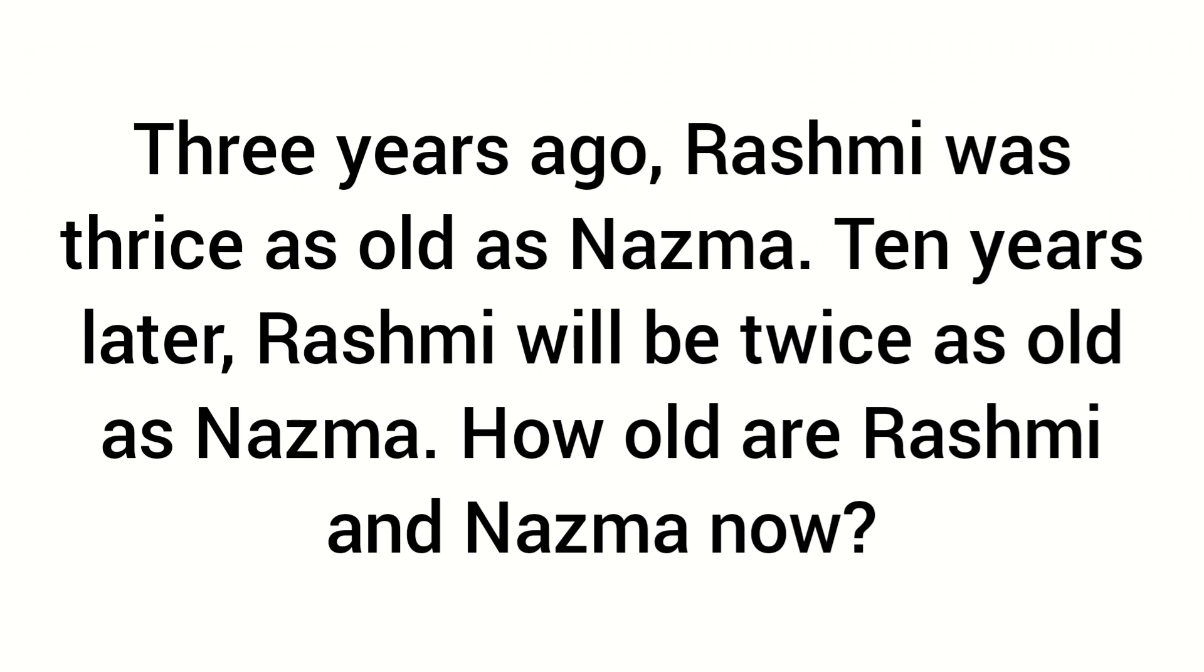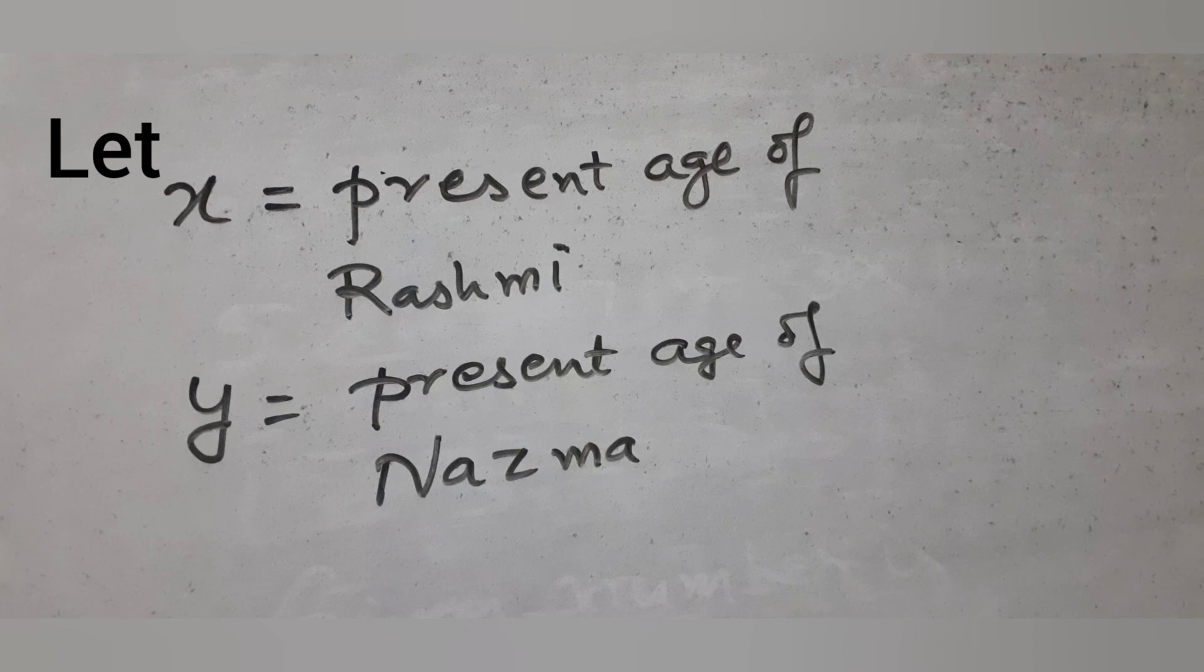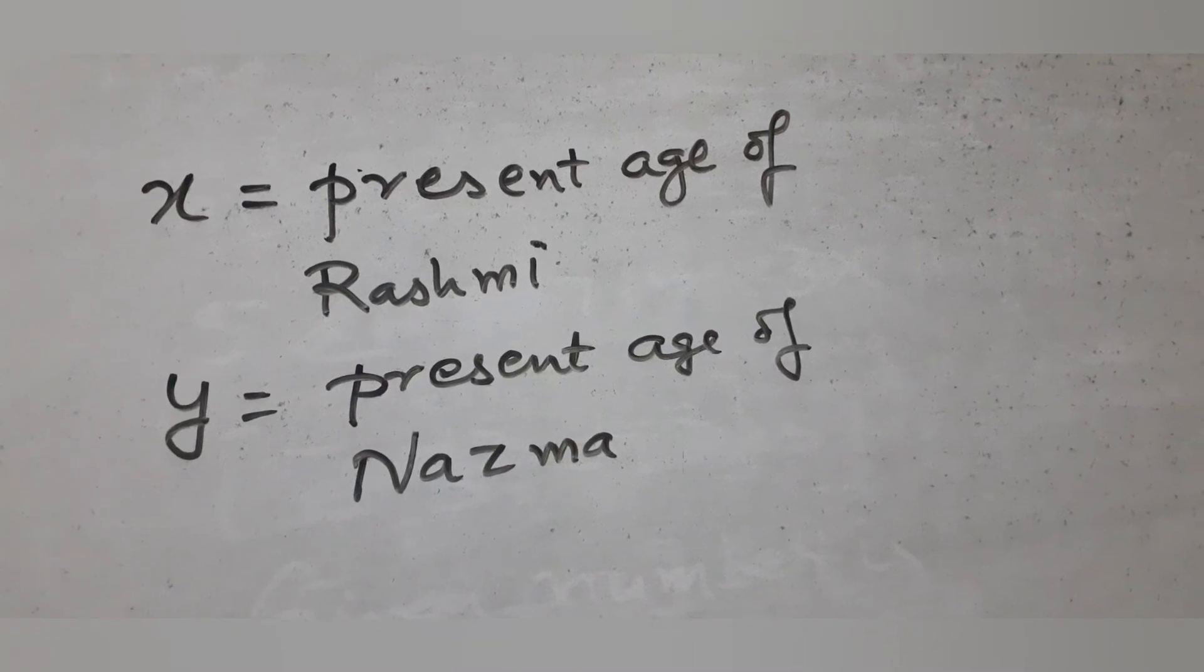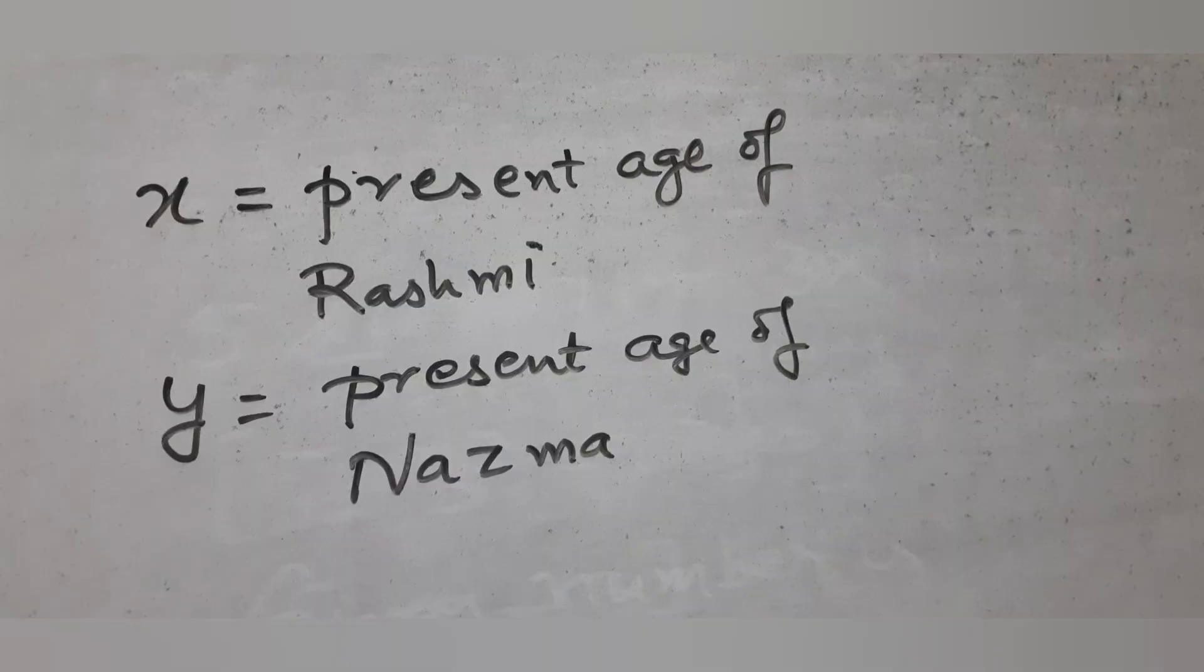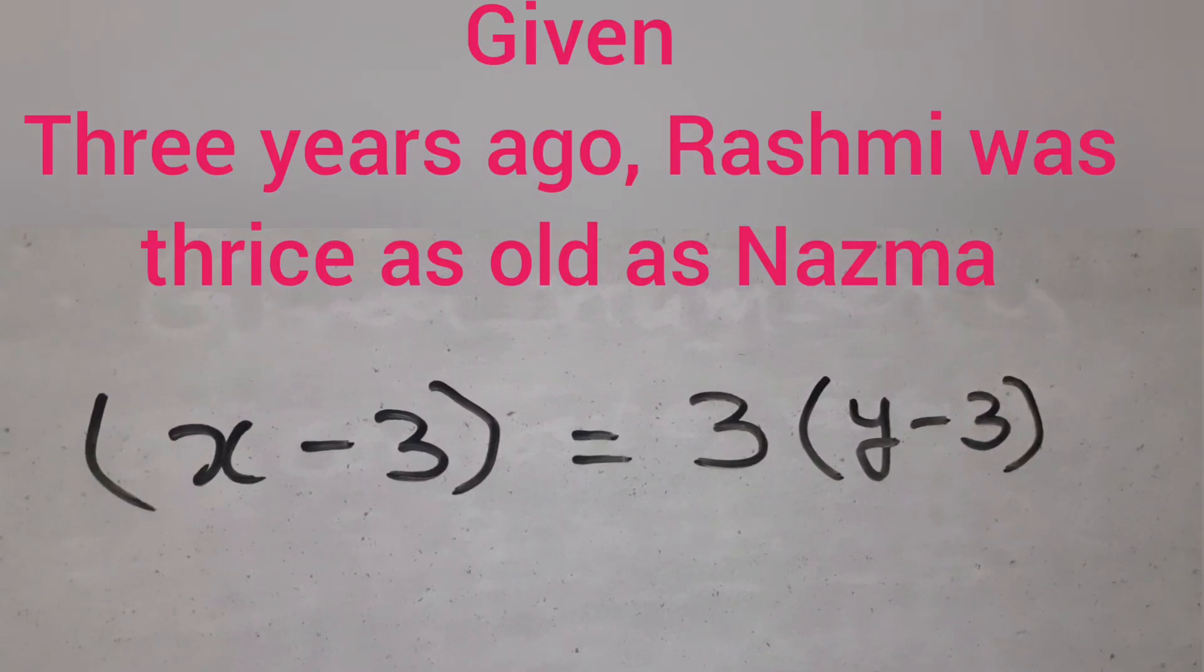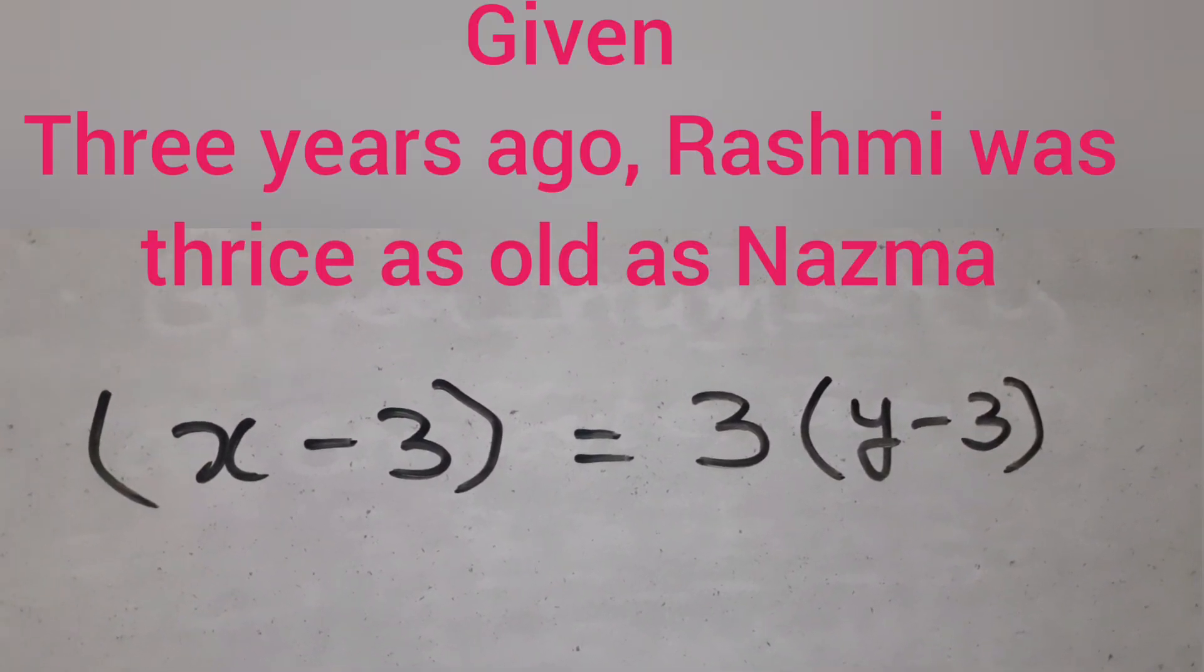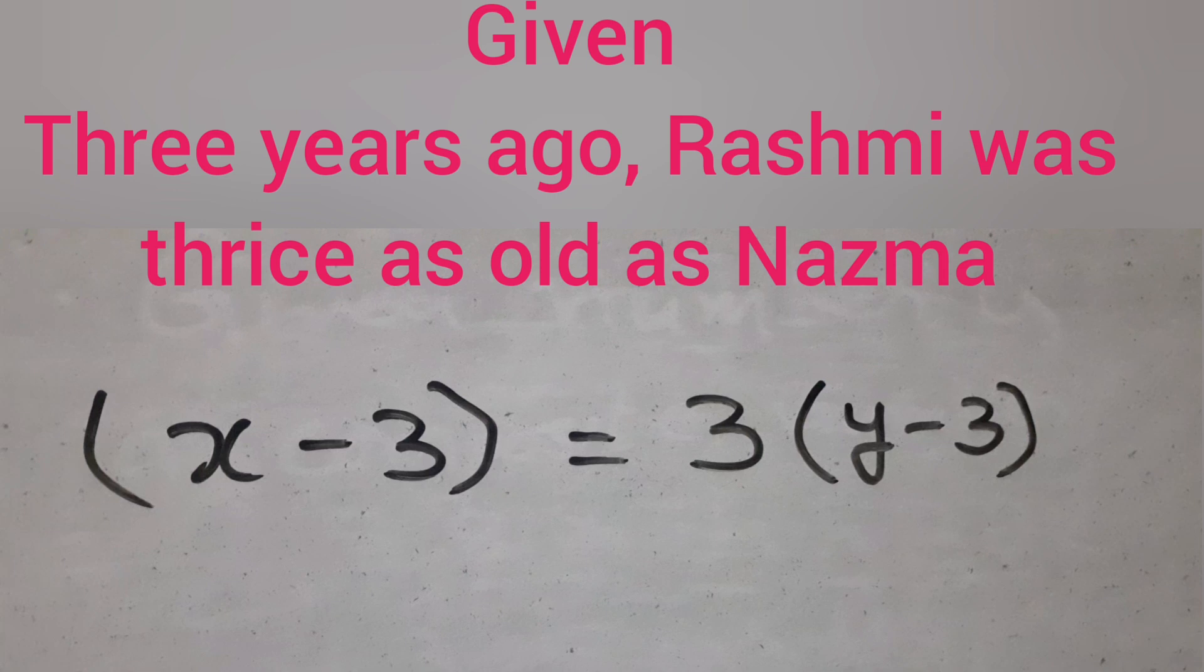We assume x is the present age of Rashmi and y is the present age of Nazma. Three years ago, the ages would be x minus 3 and y minus 3 respectively. By the given condition, x minus 3 is 3 times bracket y minus 3.